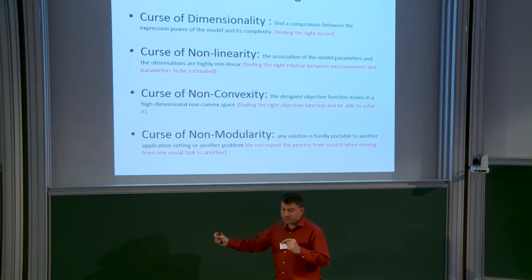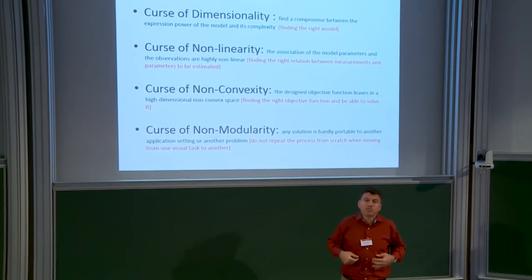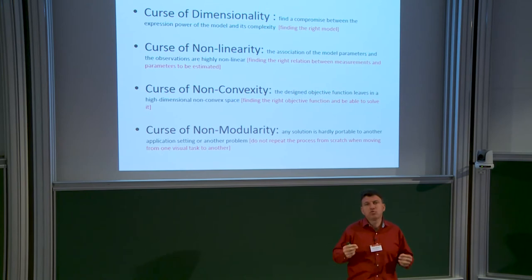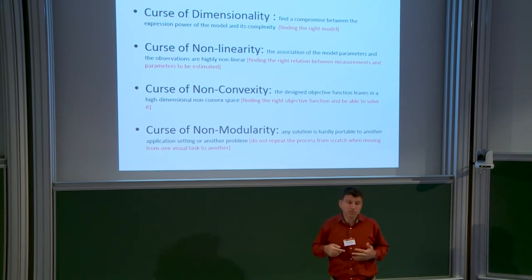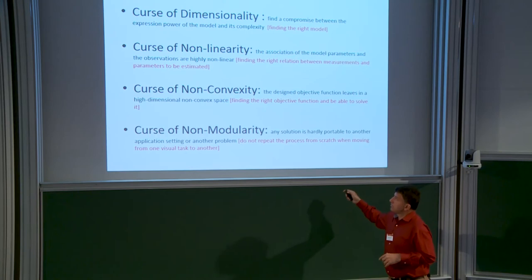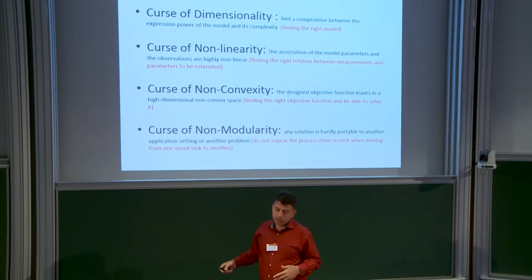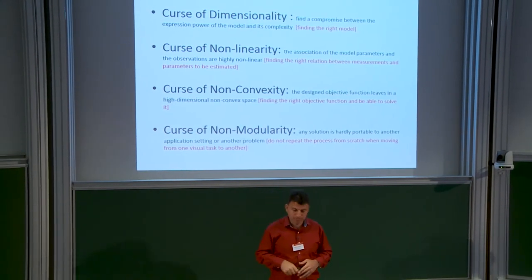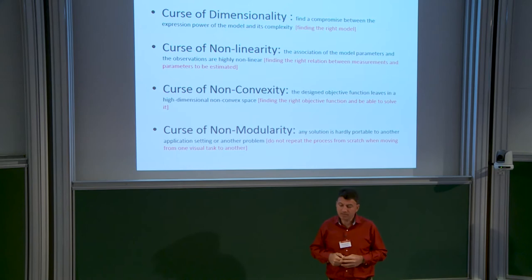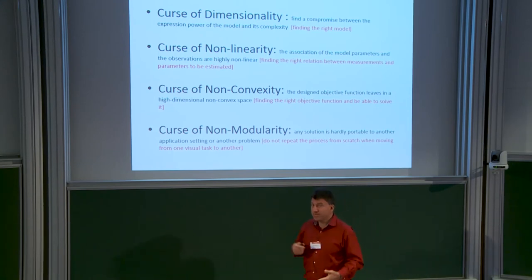The second concern is non-linearity: the parameters to estimate and the objective function have a non-linear relationship, meaning there is no direct way to measure the fitness of a model to observations. Non-linear functions make optimization very complex. The third concern, assuming the first two are solved, is non-convexity: you'll deal with many variables and a highly non-convex cost function with many local minima, so depending on how you optimize or initialize, you may end up with a non-optimal solution.